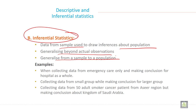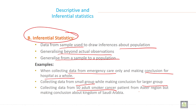Some examples of inferential statistics: collecting data from emergency care only and making conclusions for the hospital as a whole; collecting data from a small group while making conclusions for a large group; collecting data from 50 adult smoker cancer patients from Asir region but making conclusions about the Kingdom of Saudi Arabia.